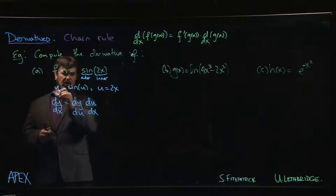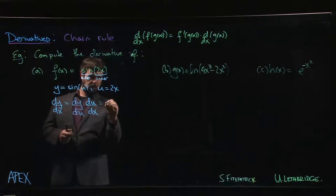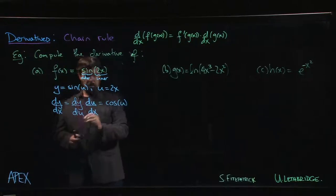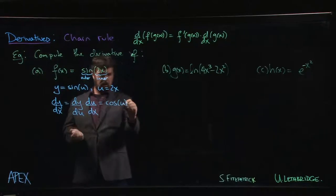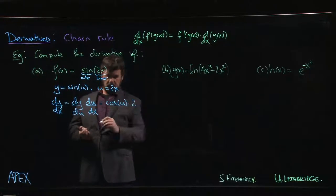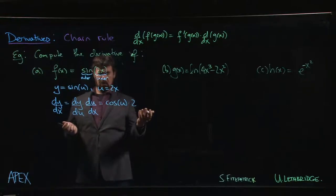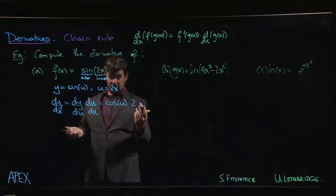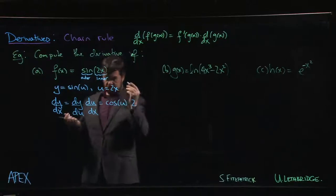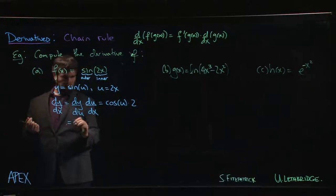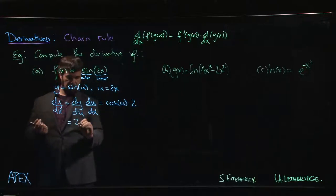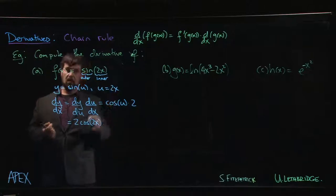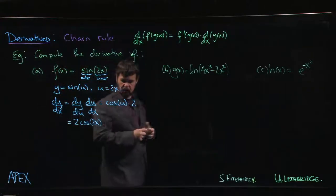y is equal to sine u, so dy du is simply cosine of u. du dx, well u is 2x, we know how to do that. Derivative of 2x is 2. But you don't like to leave your answer like this. We started with a function of x, we should end with a function of x. But we say, u is equal to 2x, so we might choose to put that 2 out front and write this as 2 cos 2x. And then we're done.